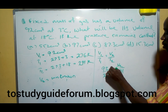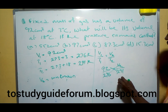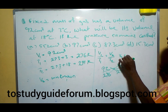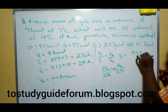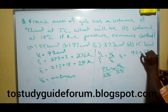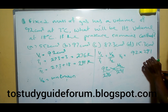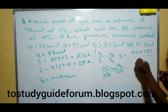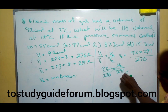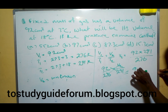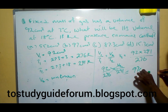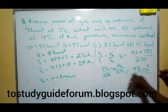So what we will do is cross-multiply. We will have V2 to be 92 times 291, all over 276. That will give us 97 cm³.